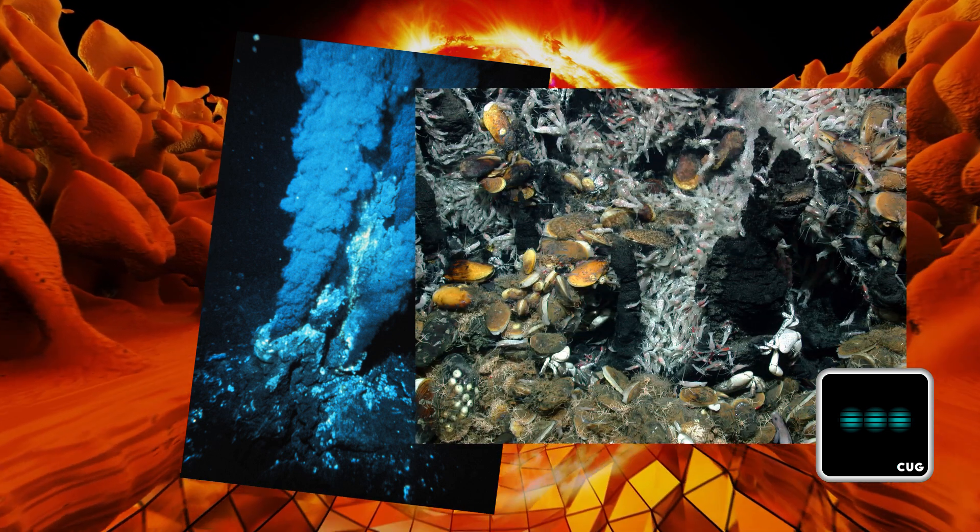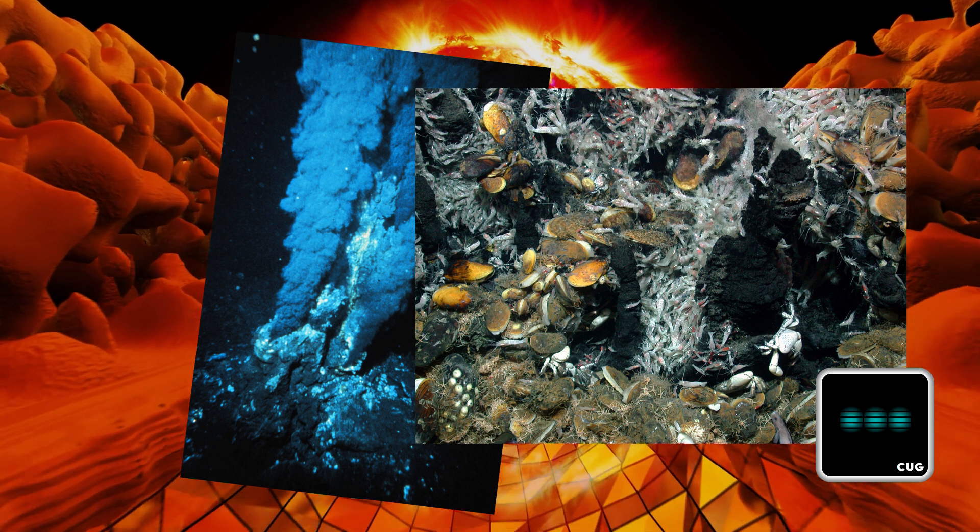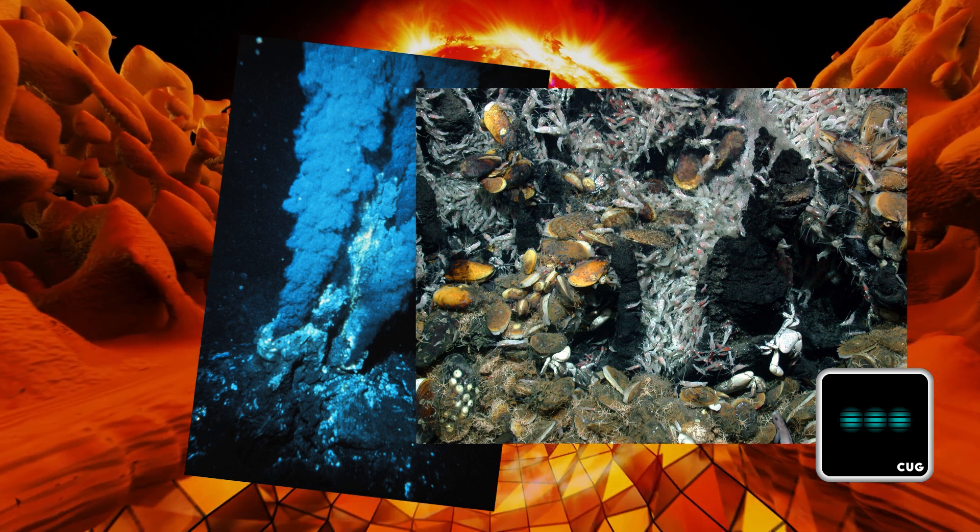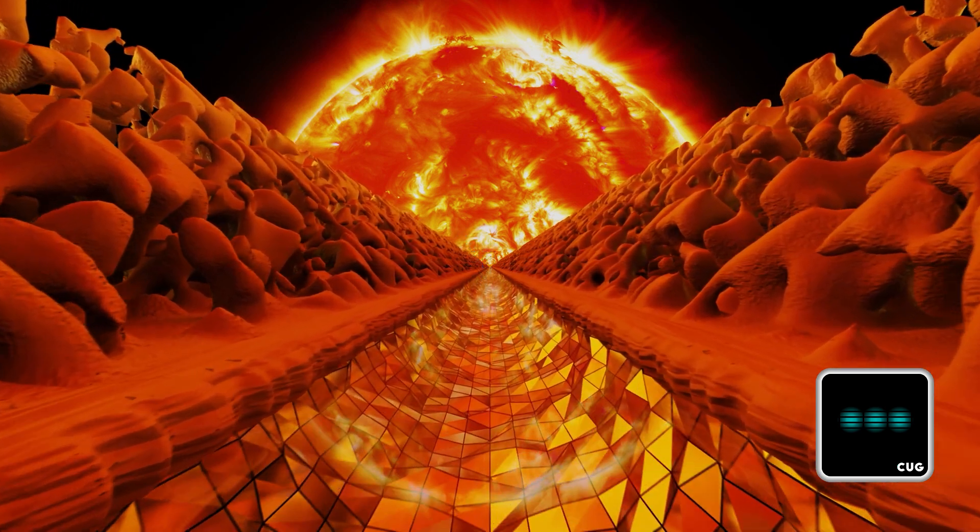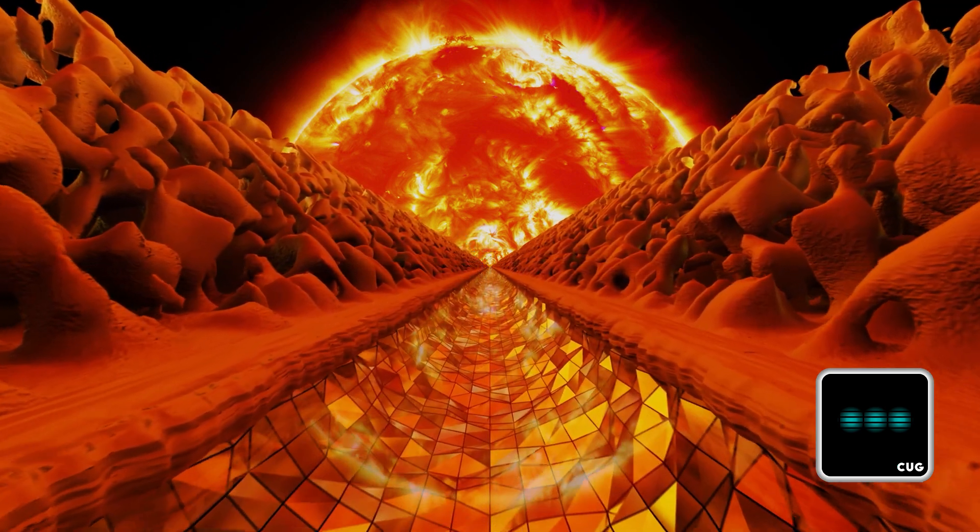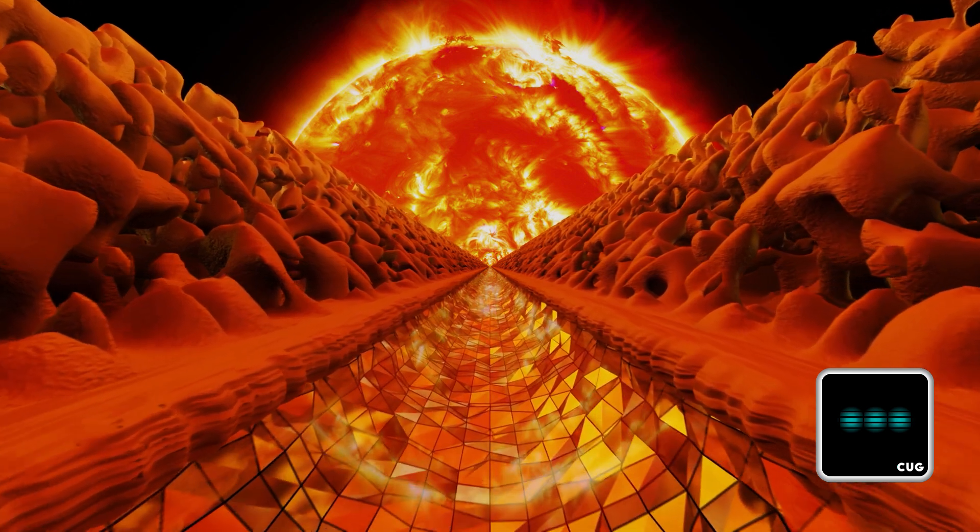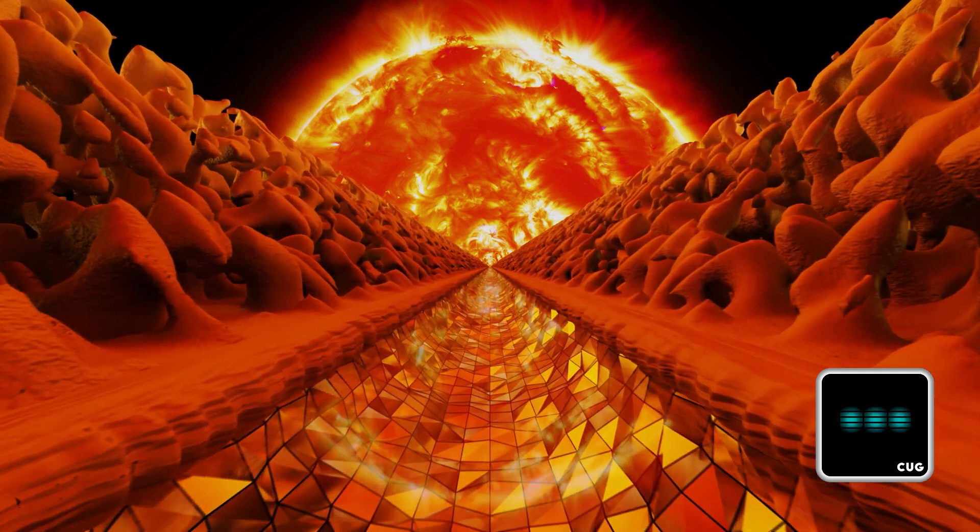True, there's also something like that on earth, so-called black smokers at the bottom of the ocean, surrounded by a whole ecosystem independent of the Sun, kept alive by the heat. But life could also have migrated there since we don't know exactly how life originated. The Sun could have played a role as well. In any case, without it the earth would not be the paradise for life that we know.